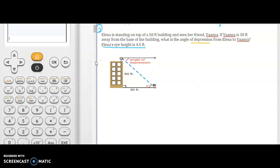In this case, Alina is standing on top of a 50 feet tall building. The height of the building is given to you as 50 feet and she is the one who is standing there and she is looking at her friend Vanya who is standing right there on the ground. If Vanya is 30 feet away, the distance from Vanya to the building is 30 feet away. What is the angle of depression from Alina to Vanya? Angle of depression from the top to the bottom.